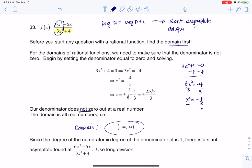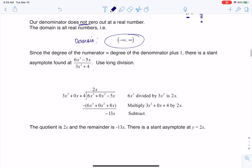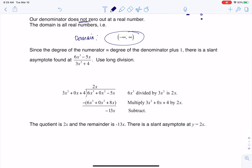But to actually find the end behavior, or the equation of the slant asymptote, as we were asked to do, I'm going to use long division. So here I go. I have to put some placeholders in there.